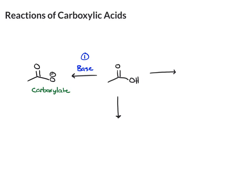The second thing is one that we learned earlier in the semester — you can do a reduction, and you can reduce the carboxylic acid to an alcohol. And then the third, which is what we'll be spending the most time on, is reacting this with a nucleophile. What happens here is the nucleophile will substitute out the OH group, giving you a carboxylic acid derivative.